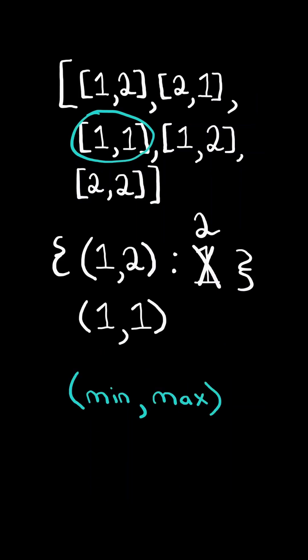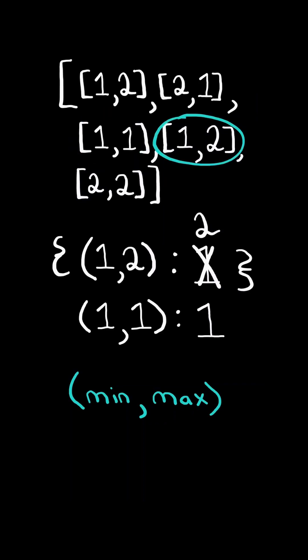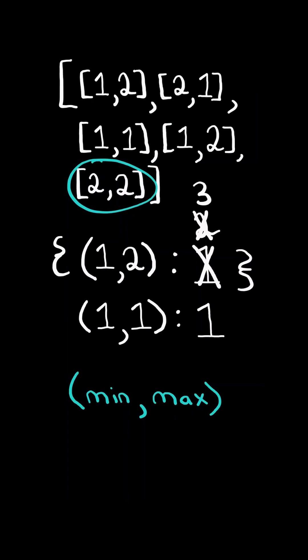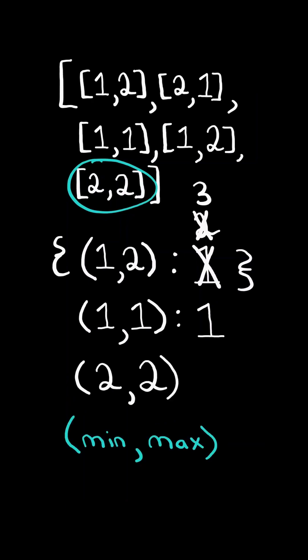We add a tuple in the dictionary with its minimum and maximum, and the value is its frequency, and we continue to the next element. Again, notice we already have a tuple with its minimum and maximum, so we will simply increment its frequency, and we continue to the next element.